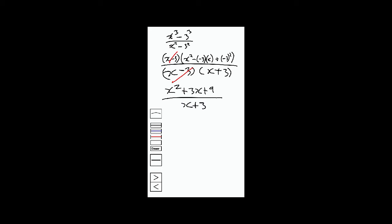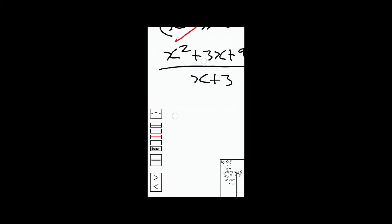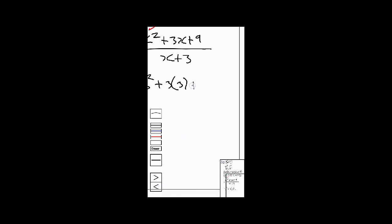From here we can just do a replacement of x equal to 3 to find the limit as x approaches 3. So we're going to have 3 squared plus 3 times 3 plus 9.